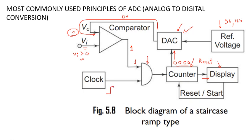The clock is going to produce pulses continuously. Because one input of the AND gate is one, the clock pulses are able to pass through the gate and will be counted by the counter. When the first pulse passes, the count increases to zero-zero-zero-one, and this same zero-zero-zero-one is given to the DAC.